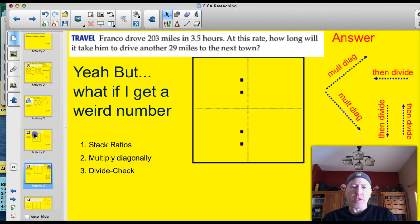Here's another problem. Franco drove 203 miles in 3.5 hours. At this rate, how long will it take him to drive another 29 miles? This is the yeah, but... What if I get a weird number? Check the cross products. See if it works.